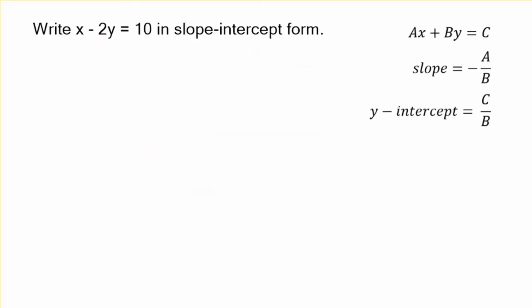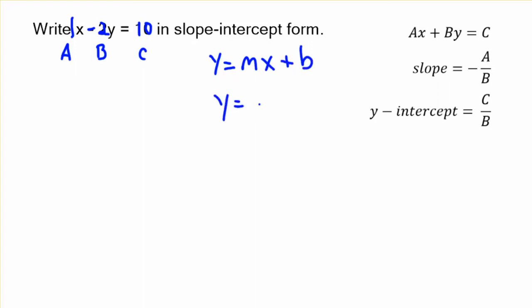Let's write another equation in slope-intercept form. Remember, you don't have to use this shortcut, but it's much quicker. If x is all by itself, the a is going to be 1. Negative 2 is b, and positive 10 is c. We'll plug it into our formula y equals mx plus b — we just need to find m and the y-intercept b.